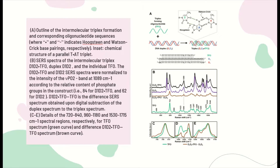In Figure 2, panel A represents an outline of the intermolecular triplex formation and corresponding oligonucleotide sequences, where dots and dashes indicate Hoogsteen and Watson-Crick base pairings respectively, and also shows the chemical structure of a parallel T·AT triplet. The corresponding SERS spectra are also shown. Difference spectroscopy is applied to both Raman and SERS analysis of nucleic acids to better expose the spectral differences emerging from the complex vibrational patterns of these large biomolecules.